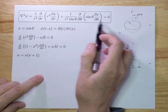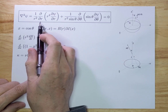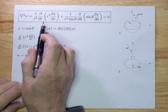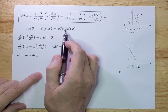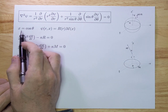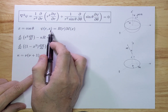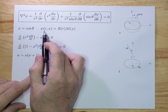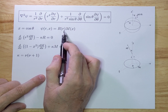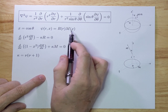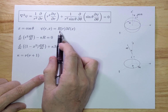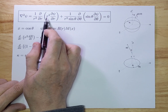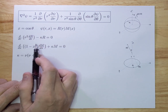It's a very complex partial differential equation, as you can see, because it depends on two variables: R and theta. Now we're going to try to solve this by separating it in variables. We're going to state x equals cosine theta and write the potential phi as a product — a function depending on just R and a function depending on just x. If you insert this into the Laplace equation, you get two equations.